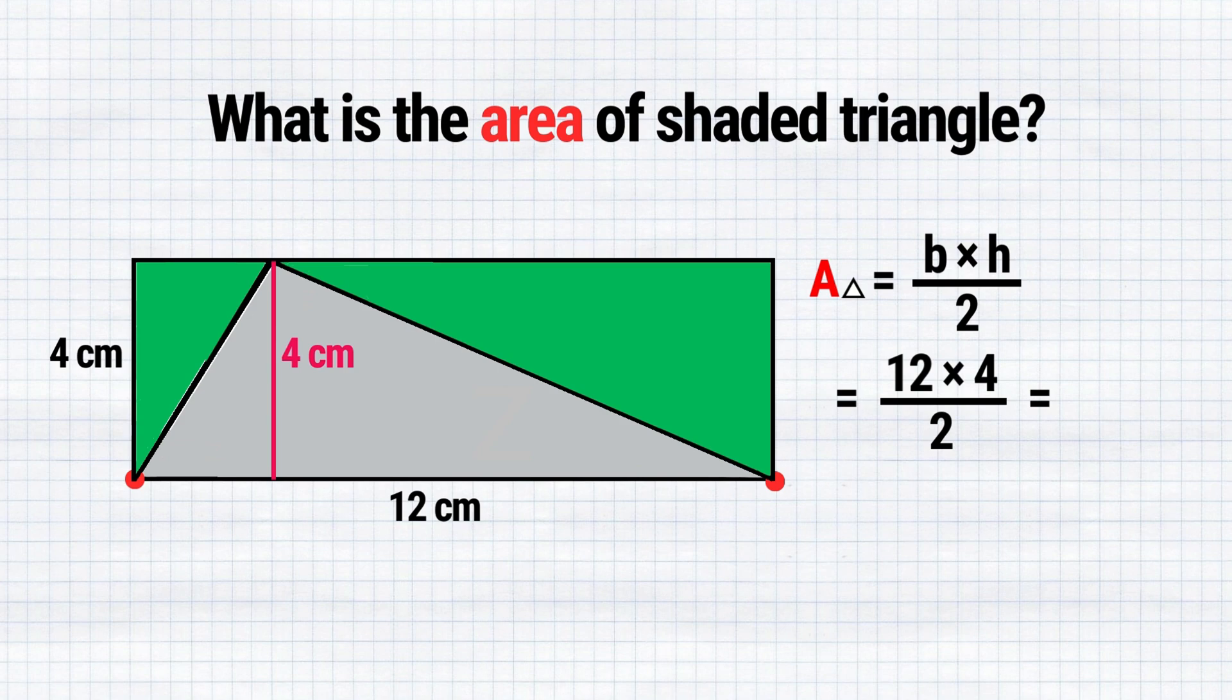Therefore, 12 multiplied by 4 and divided by 2 equals 24 square centimeters.